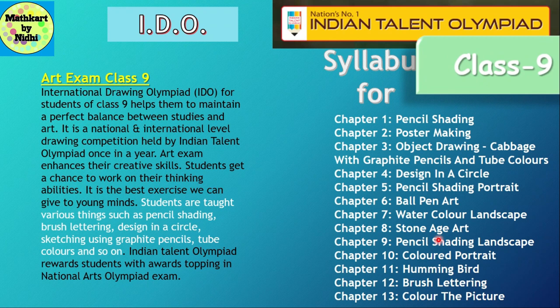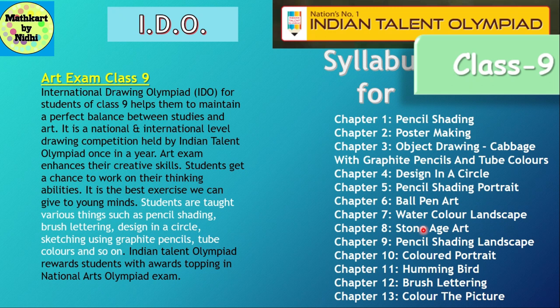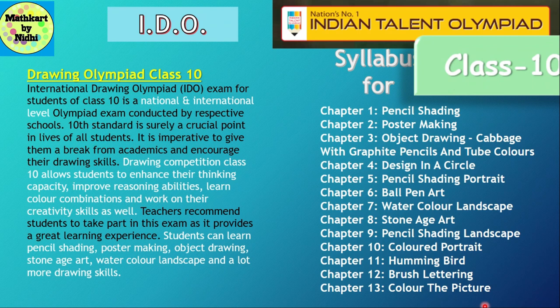For Class 9, there is an Art Exam at national and international level. Students are taught various things such as pencil shading, brush lettering, design in a circle, and sketching using graphite pencils, tube colors, and so on. You can order the book from the website for further reference. The syllabus for Class 9 is: pencil shading, poster making, object drawing cabbage with graphite pencil and tube color, design in a circle, pencil shading portrait, ball pen art, watercolor landscape, stone age art, pencil shading landscape, colored portrait, hummingbird, brush lettering, and color the picture.